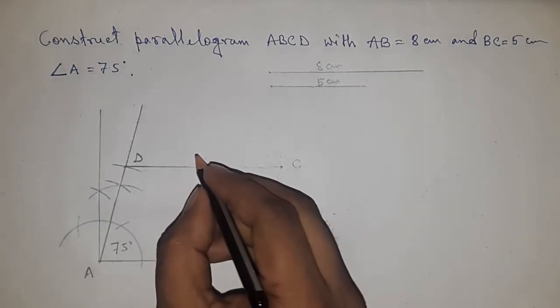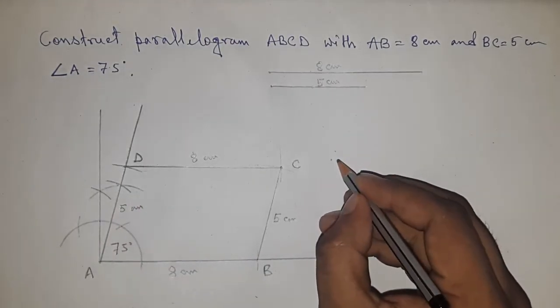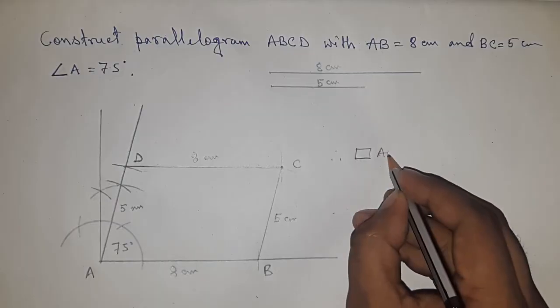These are the sides: 8cm, 5cm, 8cm, and 5cm. Therefore ABCD is a parallelogram.